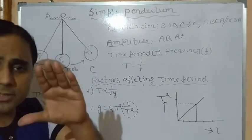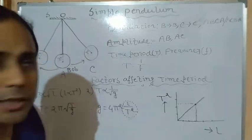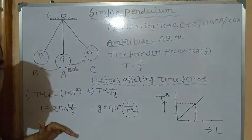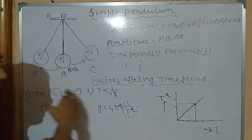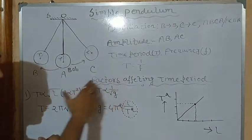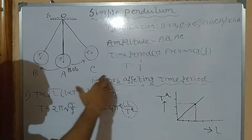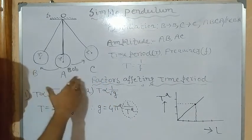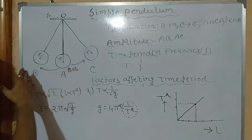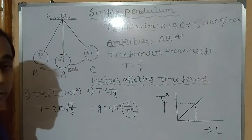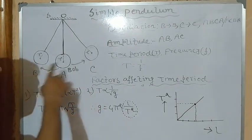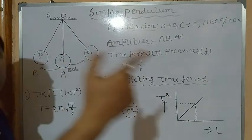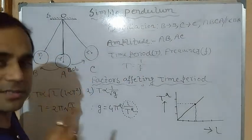A shorter time period means it can complete one swing in just one or two seconds. But if we increase the length, it will take a longer time to complete one oscillation — time period is more, and frequency is less. It cannot complete as many oscillations. More time period means slow; less time period means fast.